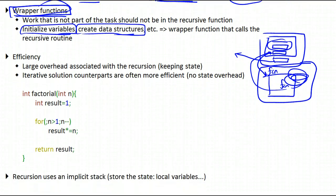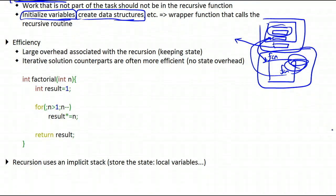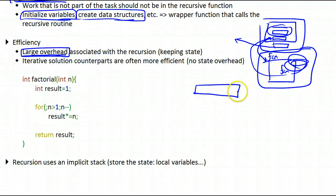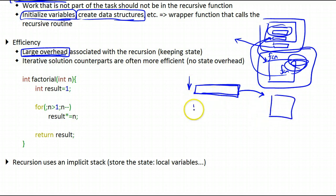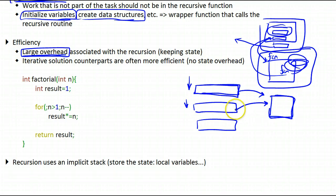Now let's look at the efficiency of recursion. We talked about the power of recursion — expressing complicated ideas in very few statements — but it is also accompanied by a large overhead. This is because of persisting the state: a function is executing, you interrupt it and save its state on the call stack, then create another execution of that function, interrupt it again, save its state, and so on. All these saves take up memory and there is overhead in the actual saving operation. So recursion carries a significant overhead.